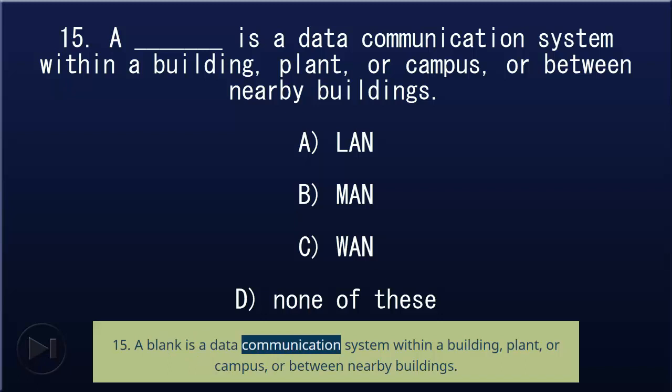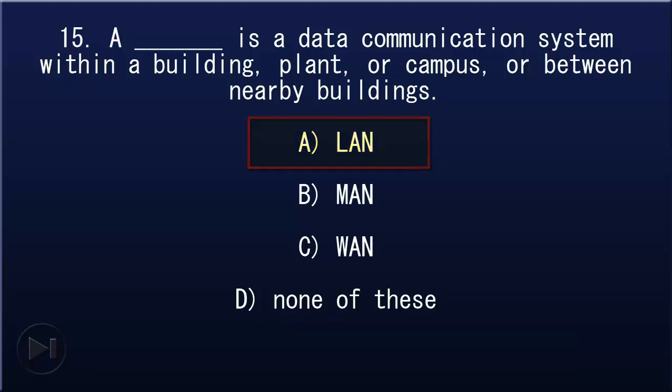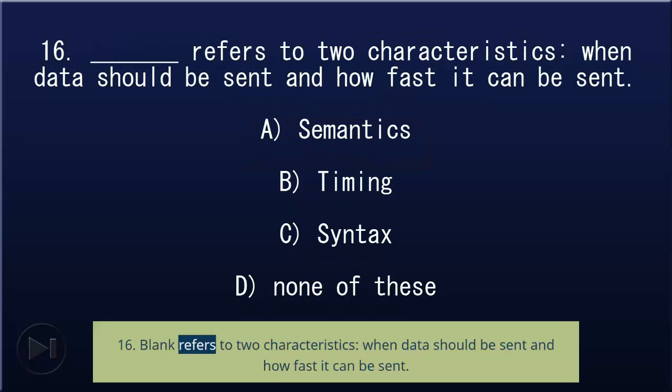15. A blank is a data communication system within a building, plant, or campus, or between nearby buildings: A) LAN, B) MAN, C) WAN, D) none of these. Answer: A, LAN.